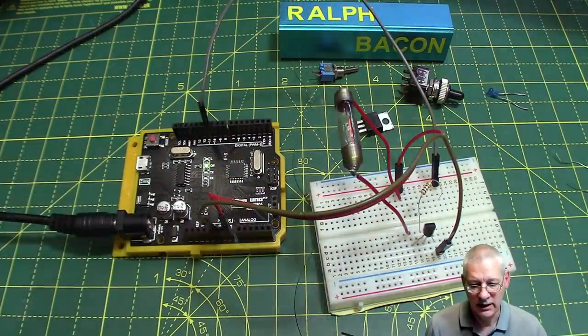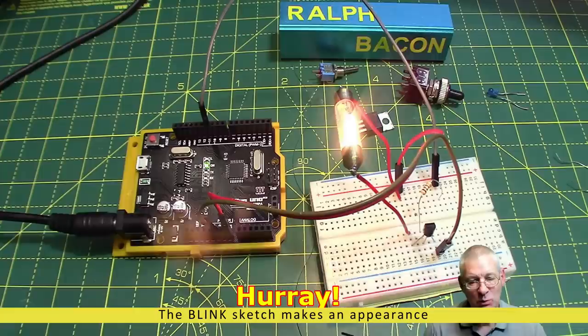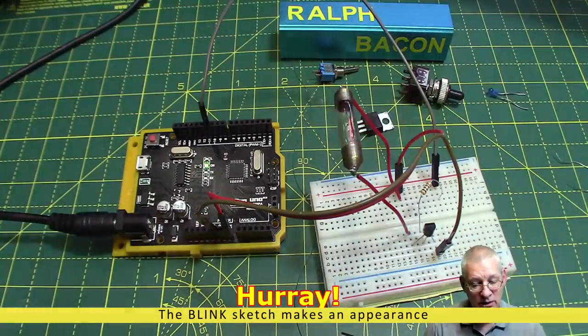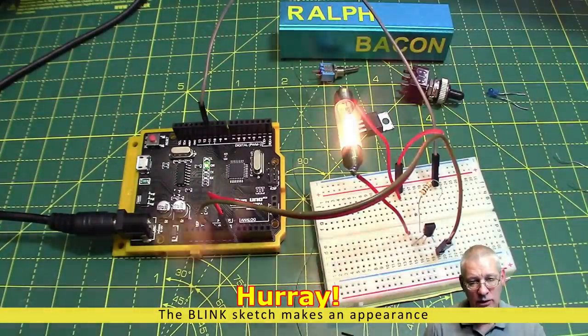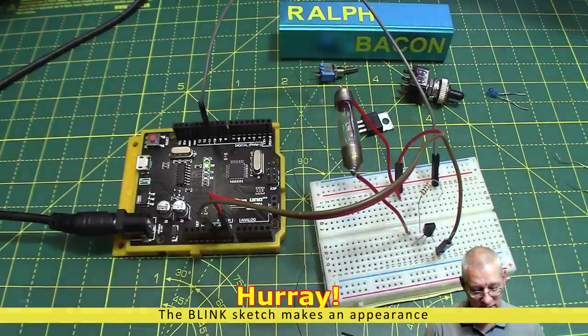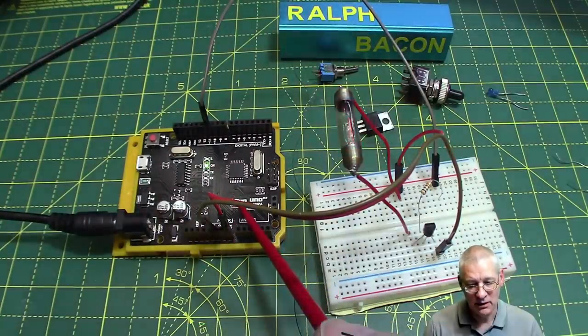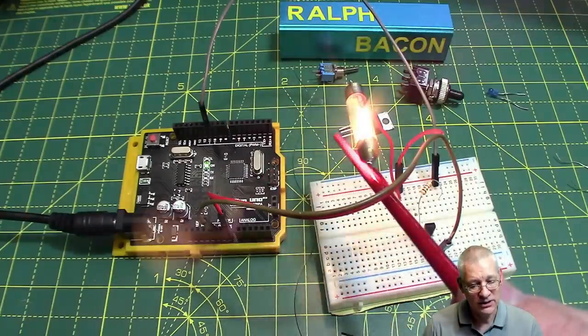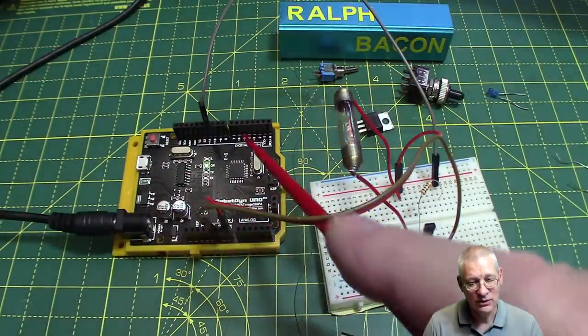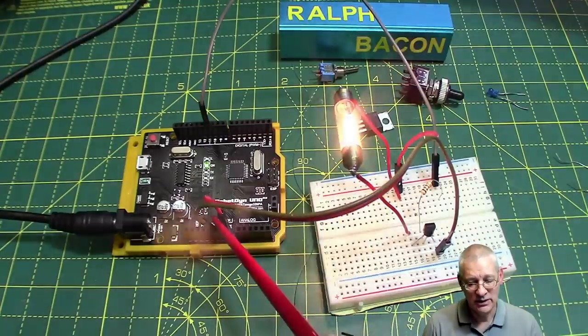Right, plugged in. Oh look, there we are. So there we have a double blink on a 12-volt bulb which would require far more current than what the Arduino could supply, and indeed far more voltage than the Arduino could supply in itself. We're not running at 5 volts, remember, we're running at 12. And everything seems to be fine.